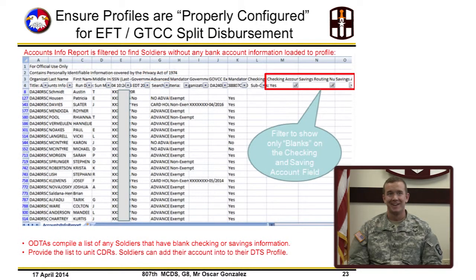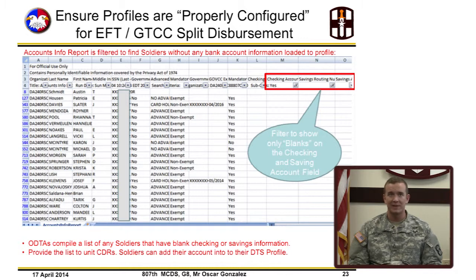To find profiles that are missing bank account information, use the Account Info Report filtered to find travelers with blank account information in their profile. The ODTAs compile a list of any travelers that have blank checking or savings account information, then provide the list to unit commanders. Only travelers and the G8 can add account information to their profile.